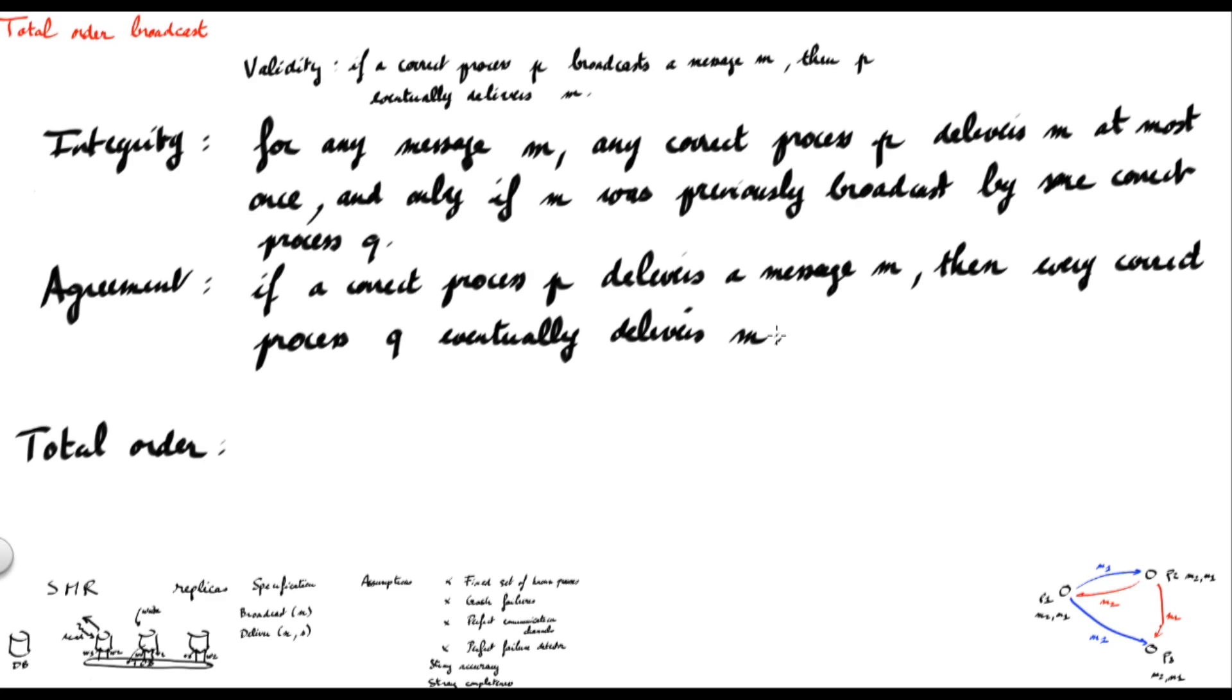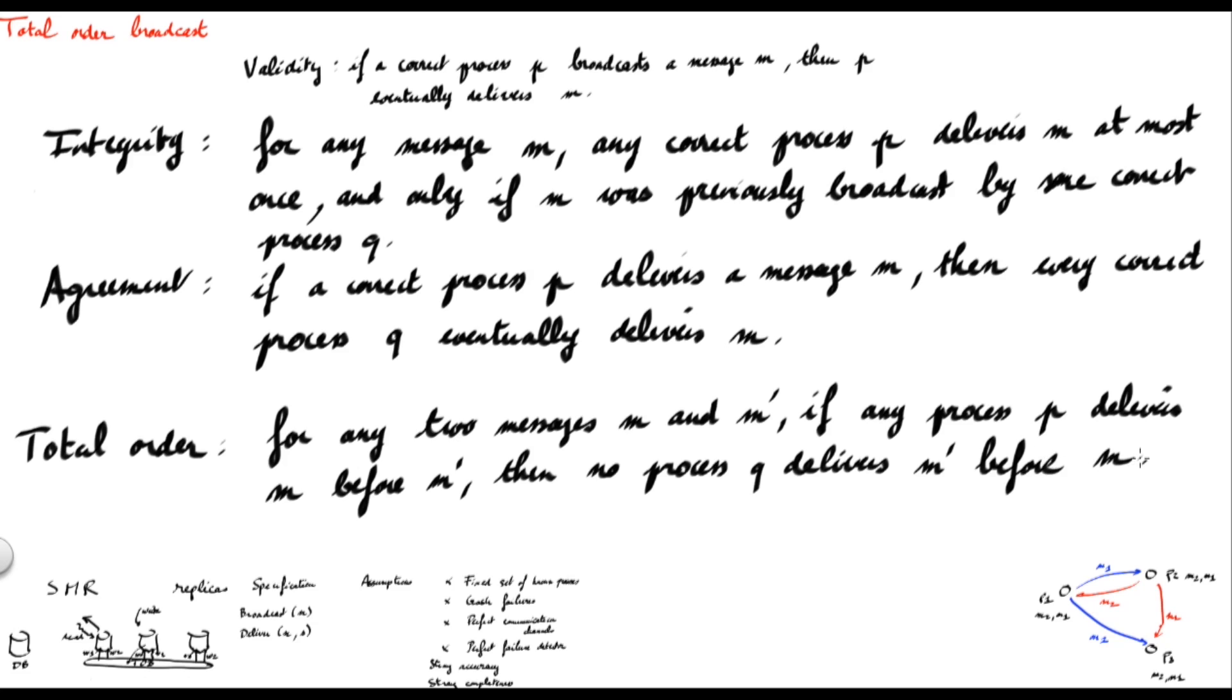Finally, the Total Order property states that for any two messages M and M', if any process P delivers M before M', then no process Q delivers M' before M.